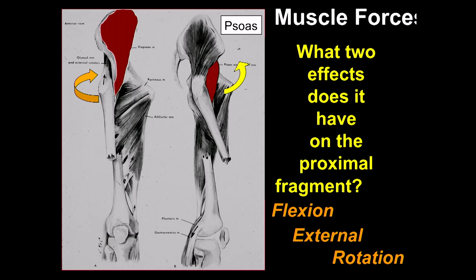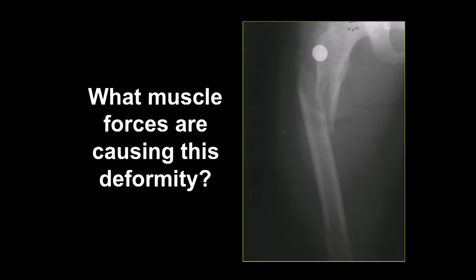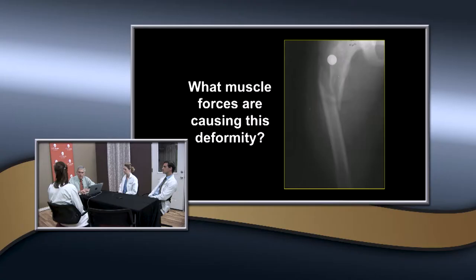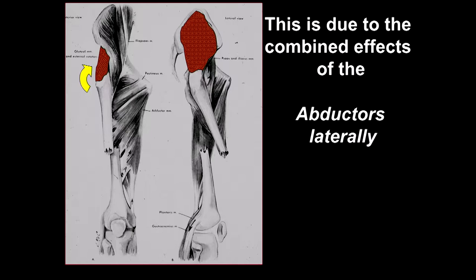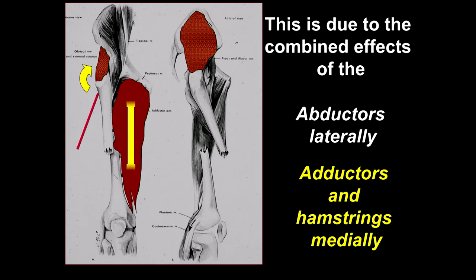When we talk about the treatment of these, we have to realize where that fragment is. We have to take the distal fragment and get it to come up and be in the same alignment with the proximal fragment. Sometimes you'll see this deformity—what muscle forces are causing it? The adductors have some effect, but the primary thing is that the abductors laterally pull it up into a varus position. The adductors are really pulling on the distal fragment, causing the angulation. If you put this in large abduction, you'll stimulate the adductors and actually increase the angulation—that's the old standing adductor paradox.